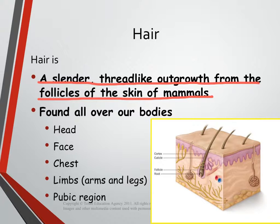Hair is a feature only found on mammals. Reptiles don't have hair, amphibians don't have hair — only mammals have hair. It's found all over our bodies: our head, our face, our chest, our limbs, and of course our pubic regions. Some regions of the body and some types of hair are better suited for forensic work than others, and we'll talk about what those are in a little bit.